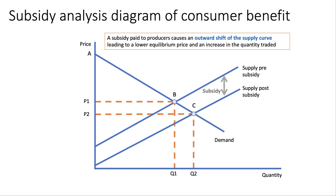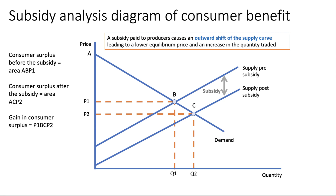So how do we show the consumer benefit? Consumer surplus before the subsidy was the area A-P1-B — the area underneath the demand curve and above the price. After the subsidy, consumer surplus increases to the area A-C-P2. So the gain in consumer surplus is P1-B-C-P2. As part of your analysis, if you get a question on subsidy, show the basics, but also bring into your answer the possible impact on consumers in terms of their welfare. The fall in price from P1 to P2, assuming nominal income stayed the same and the consumer's budget remained the same, means that their real income has gone up.